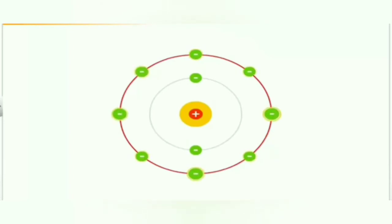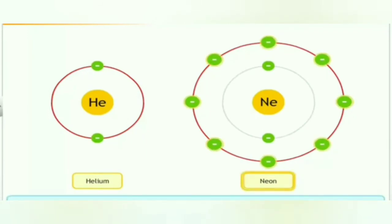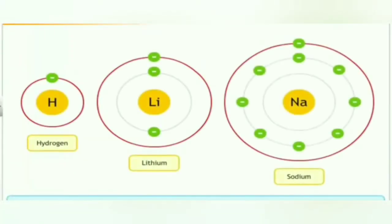Stable atoms have 8 electrons in their outermost shell. Such elements are called noble gases or inert gases; they do not react or combine with any element — their combining capacity is 0. Examples include helium and neon. Helium has 2 electrons in its outermost shell and all other inert gas elements have 8 electrons. The combining capacity of an atom to form molecules either with the same or different elements is called valency. Valency of an element is expressed in terms of the number of electrons which an atom loses, gains, or contributes for sharing in order to acquire the stable nearest noble gas configuration.